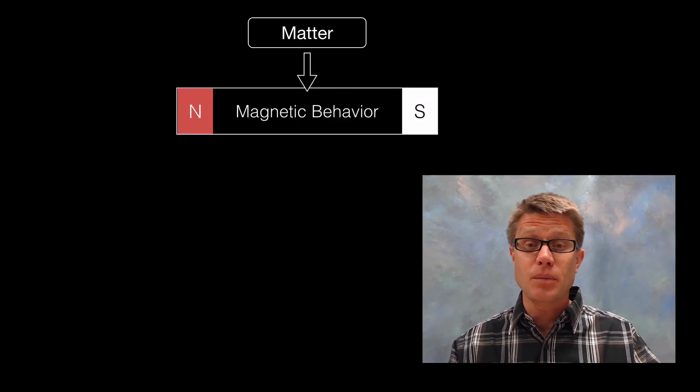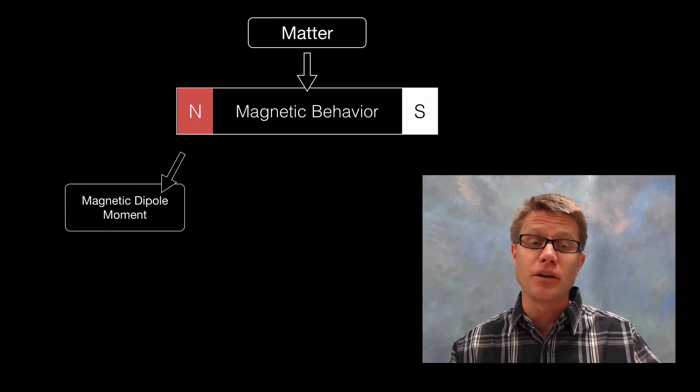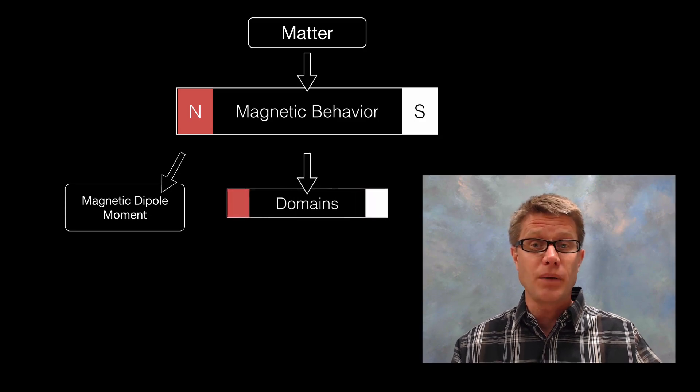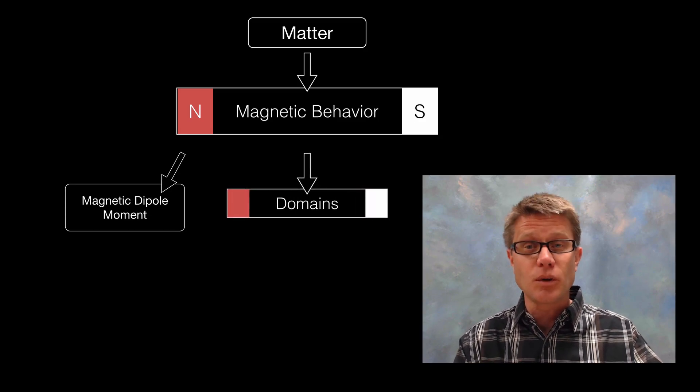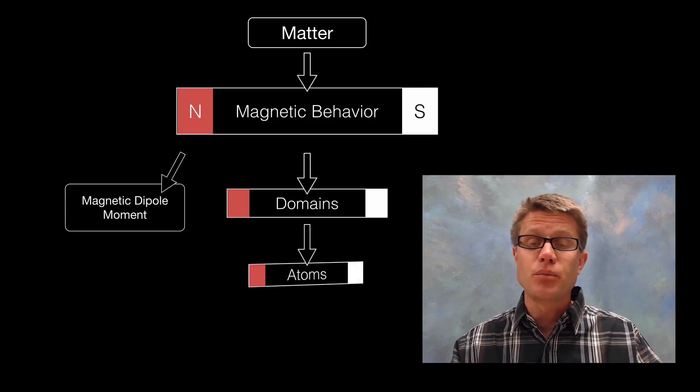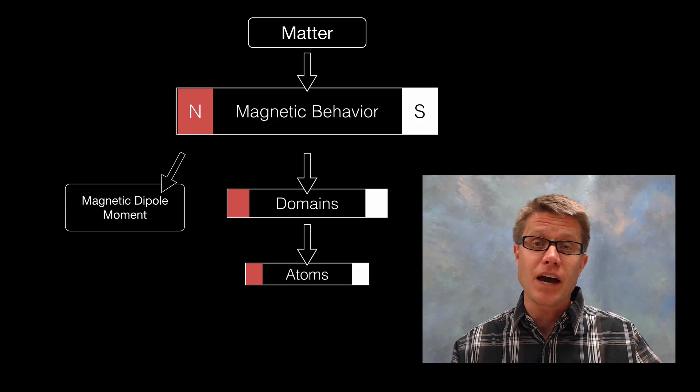Matter that shows a magnetic behavior has this property called the magnetic dipole moment. It could be at the level of domains, which are really small parts of a magnet. They can be up to about the size of a millimeter. But if we break down those they are built up of atoms.